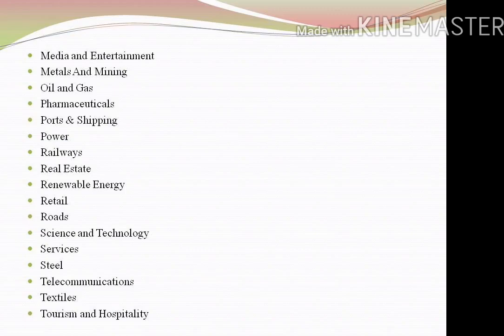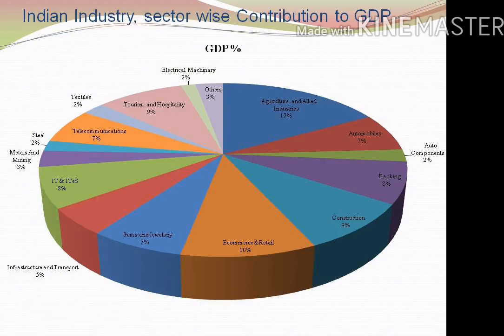Let me explain the contribution of various sectors as a percentage of our GDP. If you remember the numbers in this manner, it will be more effective for your understanding. Agriculture has a 17% share in our economy, automobiles 7%, auto components 2%, and banking 8%.